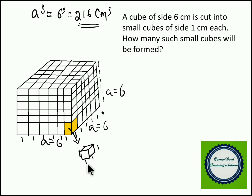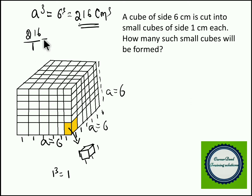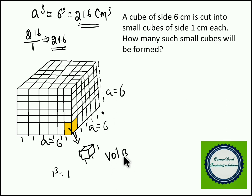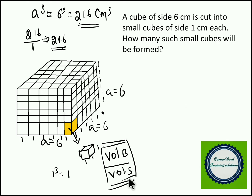The question is: how many such small cubes will you get? This is really simple. The volume of the smaller cube is 1³, which is 1. You need to find how many such small cubes fit in the big cube. That is 216 divided by 1, giving you 216 such cubes. So totally there are 216 small cubes formed when you cut the 6 centimeter cube into 1 centimeter pieces. The formula is: total number of smaller cubes = volume of bigger cube divided by volume of smaller cube.